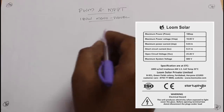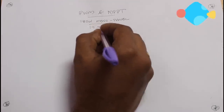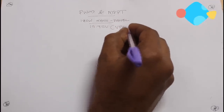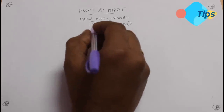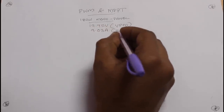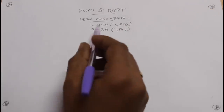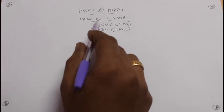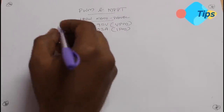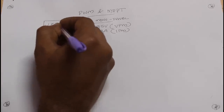I will show you the solar system. In this solar system, there is 15.95 volts — that is the maximum voltage, Vpm. The current is 9.03 amperes — that is the maximum current. The solar panel is 180 watts.